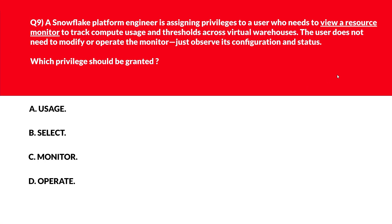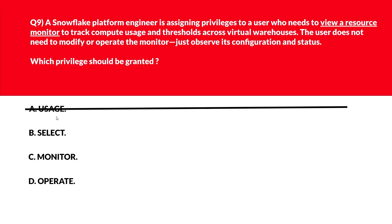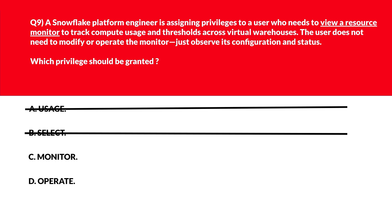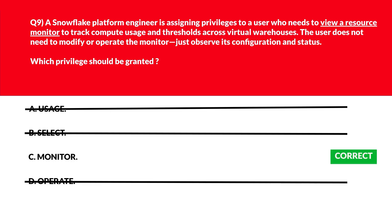This question is about viewing a resource monitor. Option A says usage — usage enables access, not visibility into monitor internals, incorrect. Option B says select — select applies to data objects, not system monitors, wrong. Option C says monitor — monitor enables viewing resource monitor details, let's keep it. Option D says operate — operate controls monitor actions, not viewing rights. We'll lock option C, monitor, as the right answer.